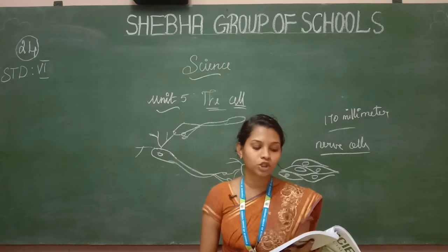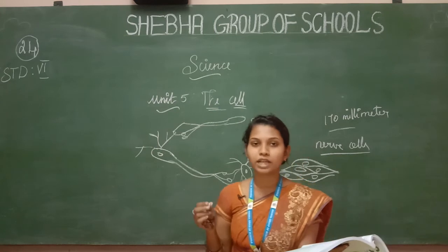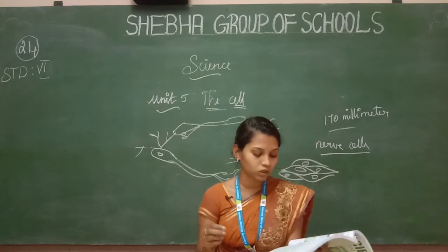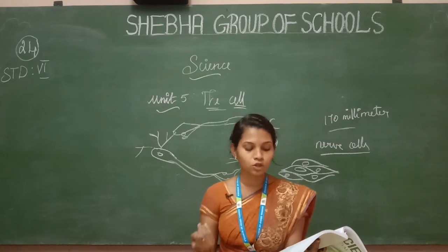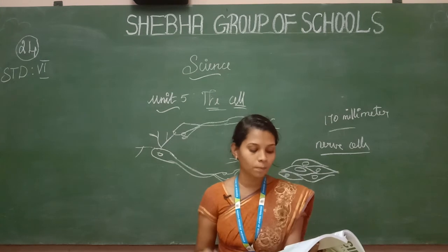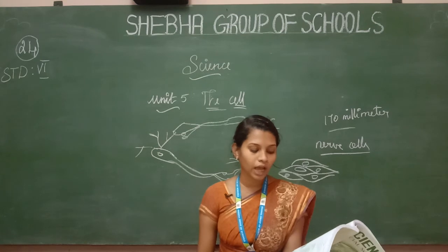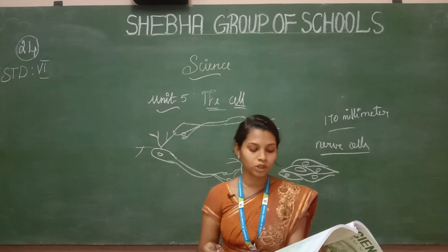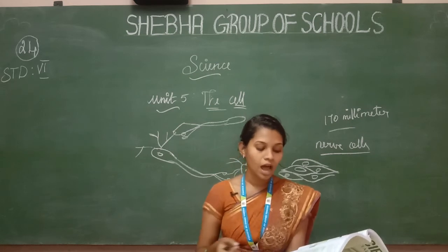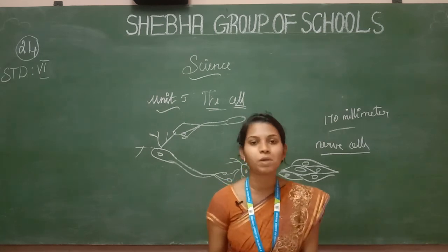Now we will see the three-dimensional cell structure on page number 63. Here we can see the cell membrane, nucleus, cytoplasm, mitochondria, Golgi complex, and endoplasmic reticulum. The above cell shows a three-dimensional view, with size, shape, and location of organelles being different.